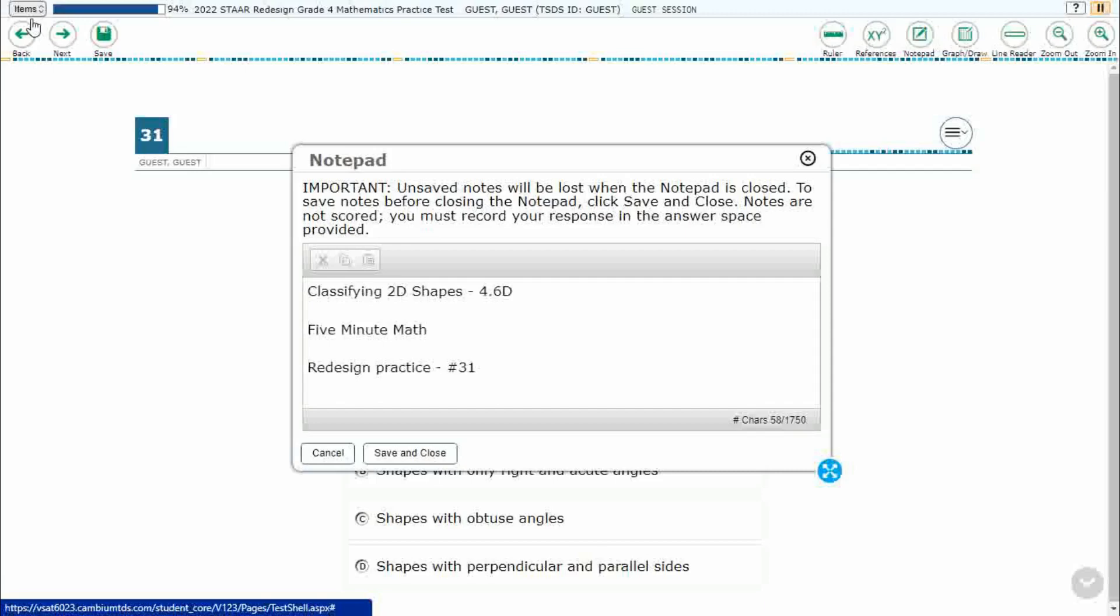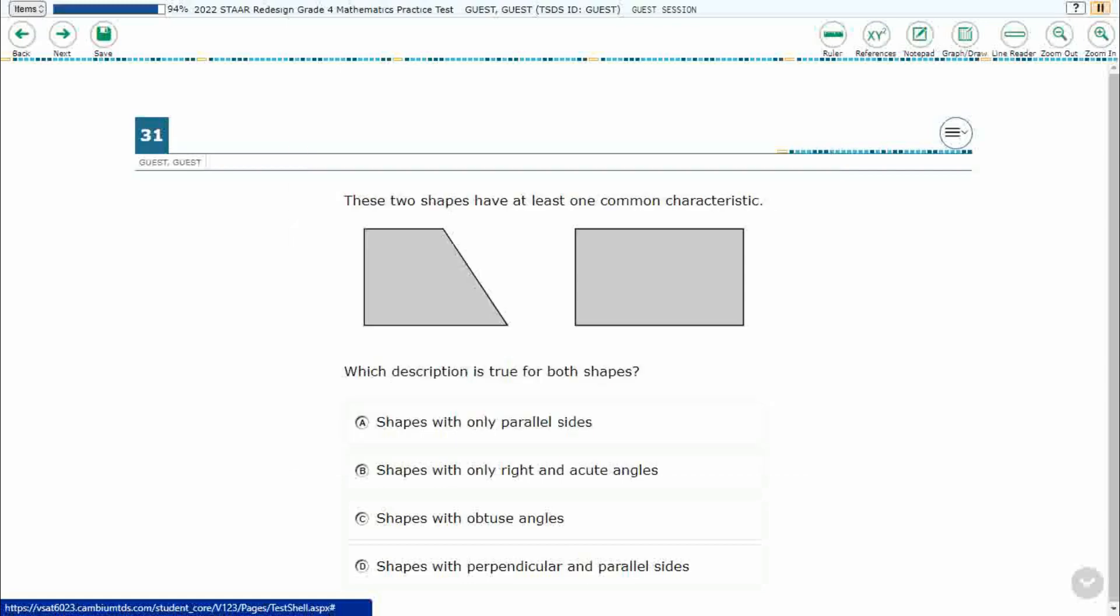Hello and welcome to 5-Minute Math. Today we are looking at the 4th grade concept of classifying two-dimensional shapes. This is standard 4.6D in the great state of Texas and we are using item number 31 of the Redesign Practice Online Star Test.